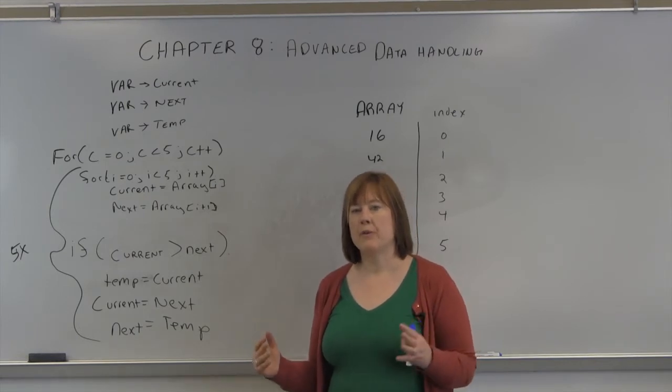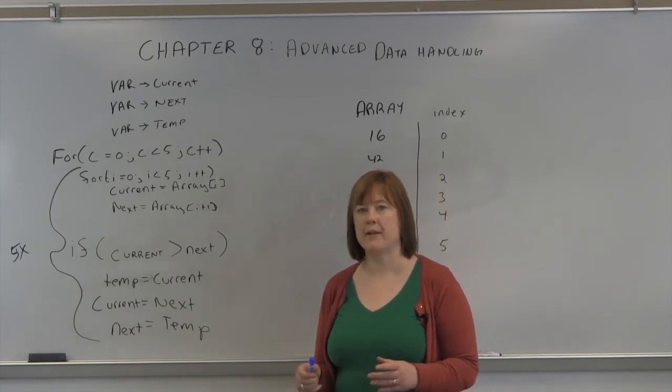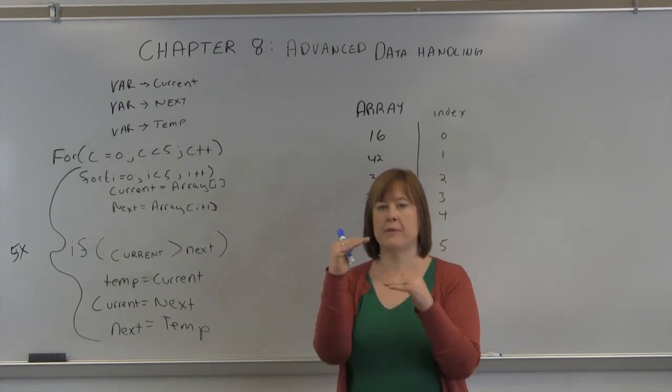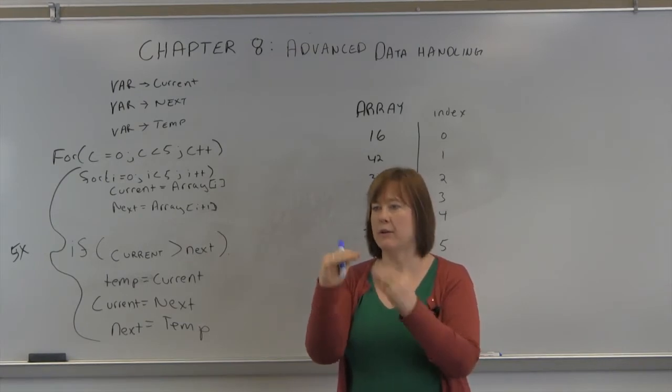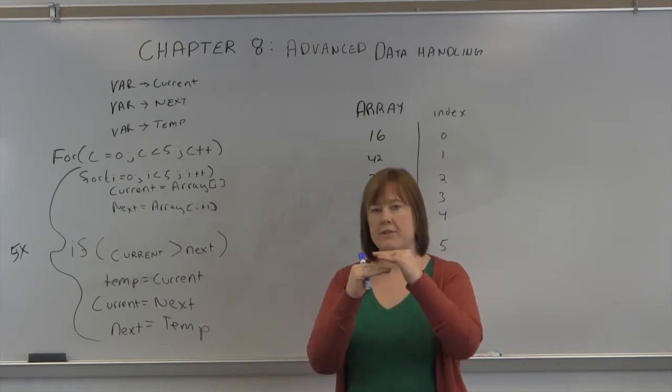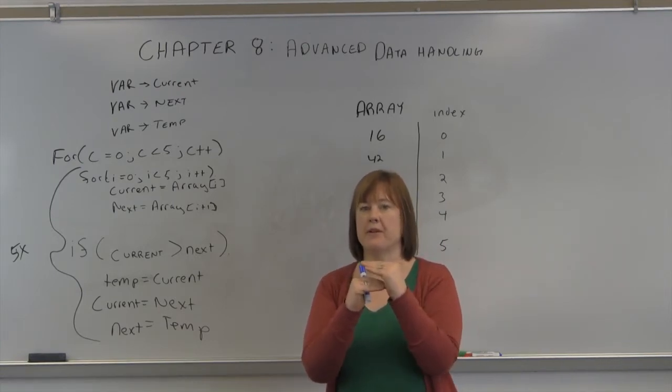We're going to go through one of the more common algorithms for that, which is called a bubble sort. And what it does is it compares two numbers that are next to each other, and if they're not in the correct order, it swaps them, which sounds really simple, but it takes several steps to make it through and sort things.